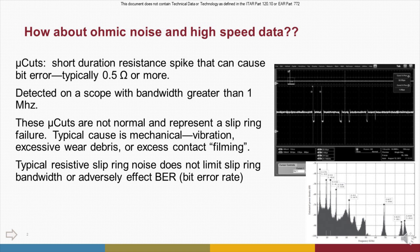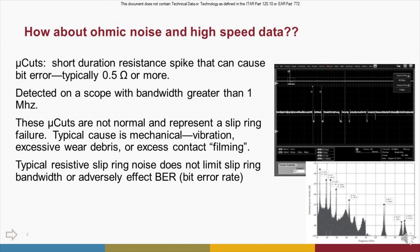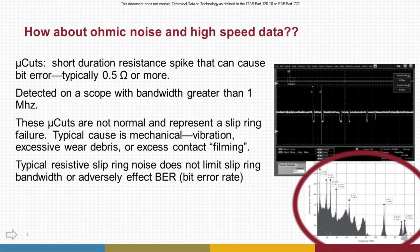Typical causes are mechanical or chemical, such as vibration, excessive wear debris, excess contact filming, or plating failures. The oscilloscope trace here shows a typical microcut event. The top trace shows high resistance signal spikes over one ohm, and that is spread out in the middle trace into three pairs of 30 kilohertz spikes, with some obvious attenuation as we progress. This shows that mechanical vibration — with 30 kilohertz as the fundamental — is often part of the explanation of these microcuts.